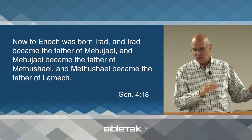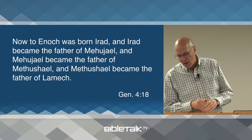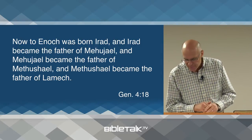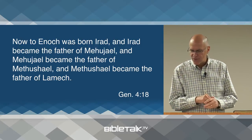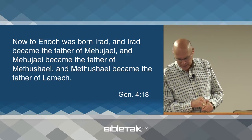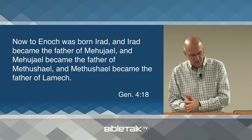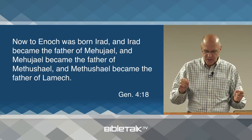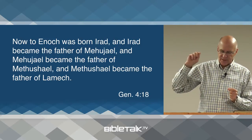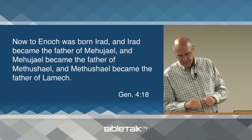Verse 18 — To Enoch was born Irad, and Irad became the father of Mehujael, Mehujael became the father of Methushael, and Methushael became the father of Lamech. So the Cain family line is described here to provide a time bridge to a man called Lamech, who is a significant person in Cain's lineage.